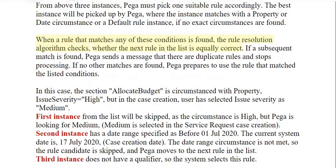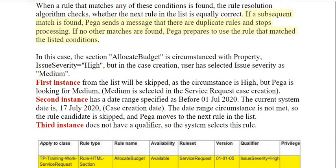When a rule that matches any of these conditions is found, the rule resolution algorithm checks whether the next rule in the list is equally correct. If a subsequent match is found, PEGA sends a message that there are duplicate rules and stops processing. If no other matches are found, PEGA prepares to use the rule that matched the listed conditions.